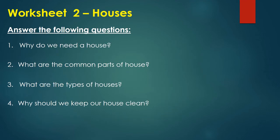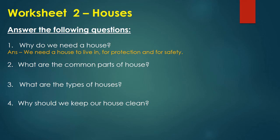Now moving to worksheet two — answer the following questions. The first question is: why do we need a house? Answer: we need a house to live in, for protection, and for safety. The second question is: what are the common parts of a house? Answer: doors, windows, walls, and roof.